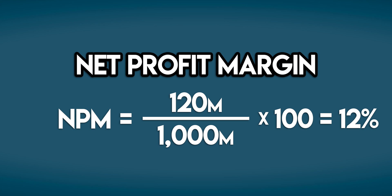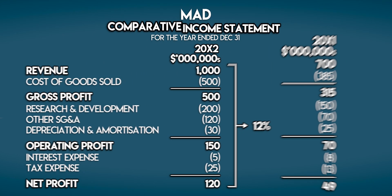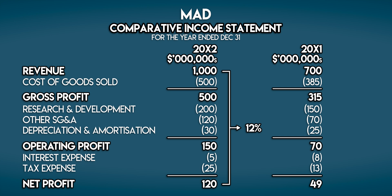Before we move on, let's make some comparisons. First, we'll look into MAD's year-on-year movement in Net Profit Margin. On the left, we have the current year where they generated $120 million in net profit on $1 billion of revenue — a 12% net profit margin. And on the right, we have the previous year, in which MAD generated $49 million in net profit from $700 million in revenue — a 7% net profit margin. So year-on-year, MAD managed to improve their top-line revenue by $300 million and increase their net profit margin by 5%, resulting in a huge $71 million increase in net profit on the bottom line.